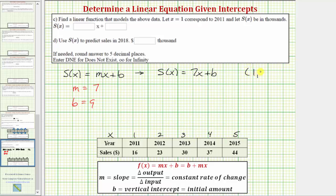So using the ordered pair one comma 16, we can substitute 16 for S(x) and one for x. And notice how if we subtract seven on both sides, we still get b equals nine. So now we know the linear function that models the table is S(x) = 7x + 9. Looking at our question, we only enter seven here because the x is already there and then plus nine.